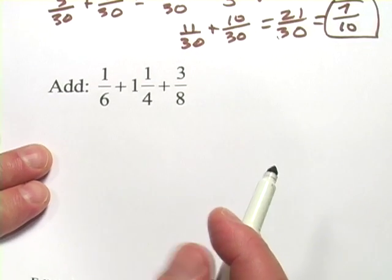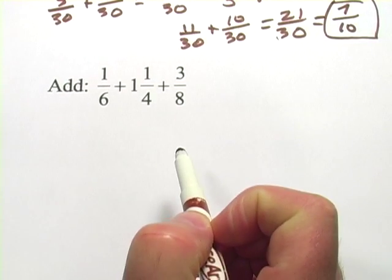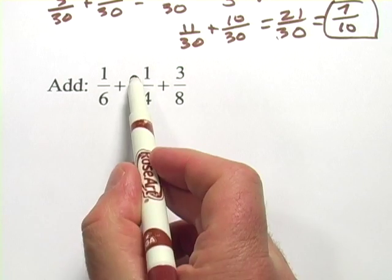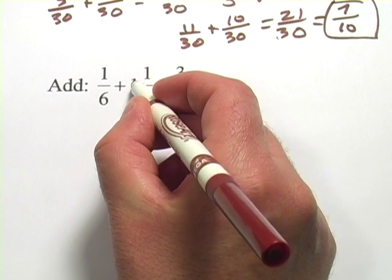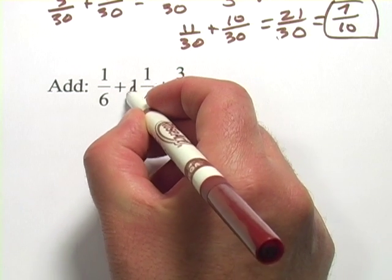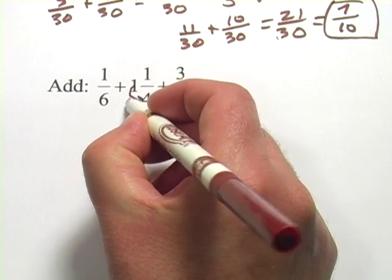This one's just slightly complicated by the fact that we have a mixed number here. And I think the first thing I'm going to do is turn this into an improper fraction. And to do that, you take the number here, the integer, and you multiply it by the bottom. So 1 times 4 is 4.